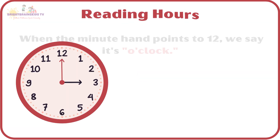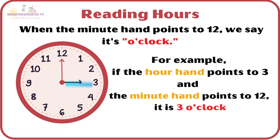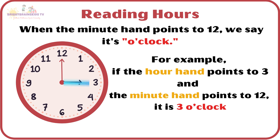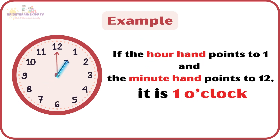Reading hours. When the minute hand points to twelve, we say it's o'clock. For example, if the hour hand points to three and the minute hand points to twelve, it is three o'clock. If the hour hand points to one and the minute hand points to twelve, it is one o'clock.